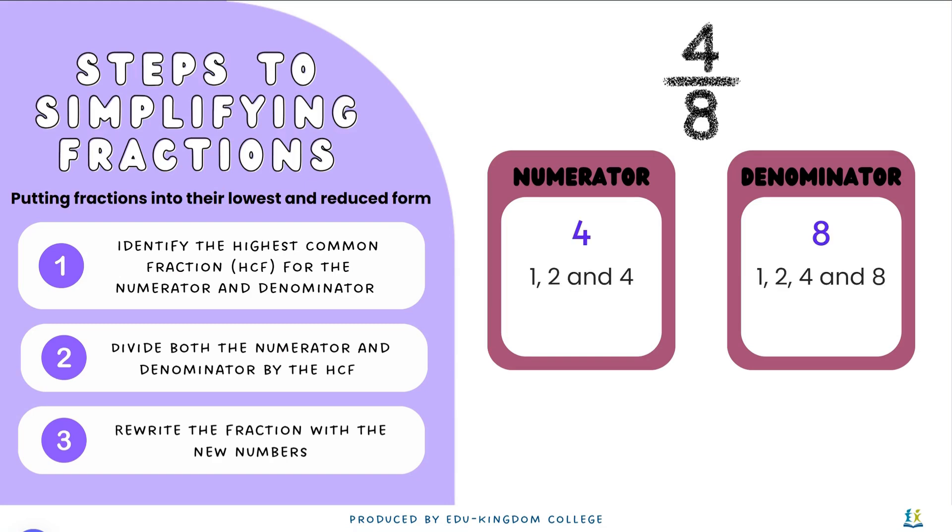For 4, it has factors 1, 2 and 4. And 8 has factors 1, 2, 4 and 8. We can see that the highest common factor is going to be 4.